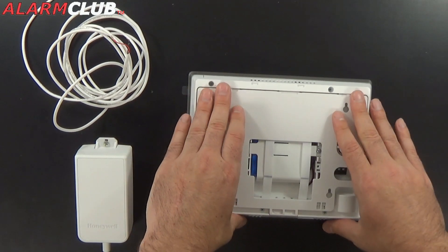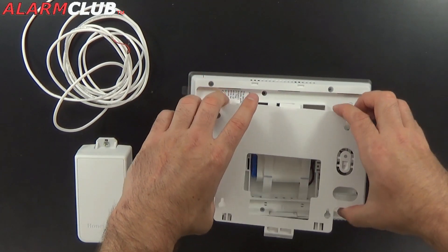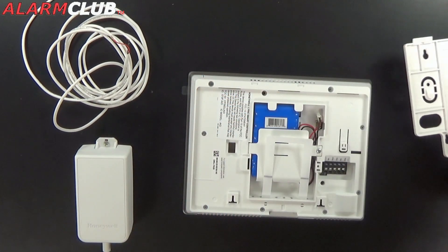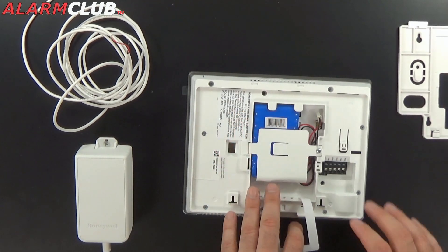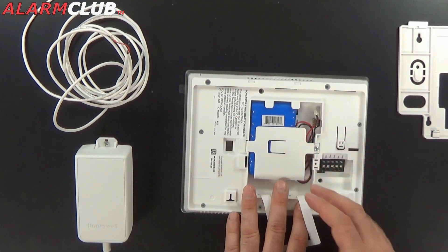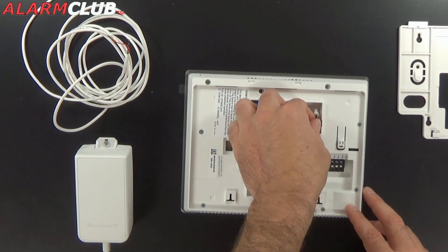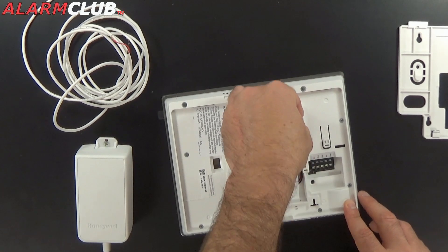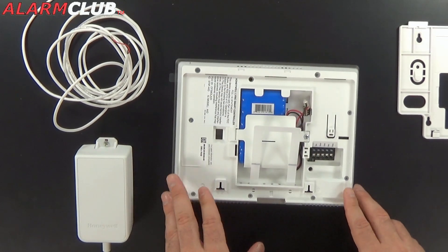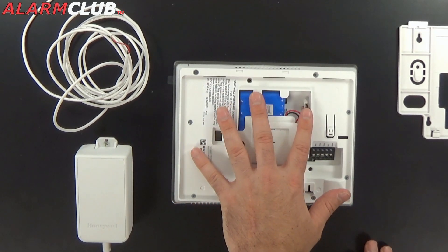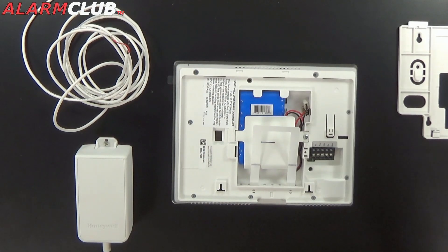And the second step, which is to install your battery. So with this mounting plate off and to the side, basically this Lyric Security System comes with the backup battery already installed. When you're ready to power the system up, all you would have to do is plug this in. And we will get to that point. I just don't want to plug it in yet because there's other things that we need to do first.